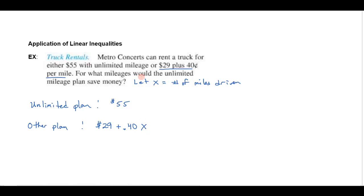The question is for what mileages would the unlimited plan save money? So if I want the unlimited to save money, that means the unlimited would be less than the other plan. Notice what I did is I just wrote in words so I understood exactly what the problem asked for. I want the unlimited to save me money, so the unlimited has to be smaller or less than the other plan.